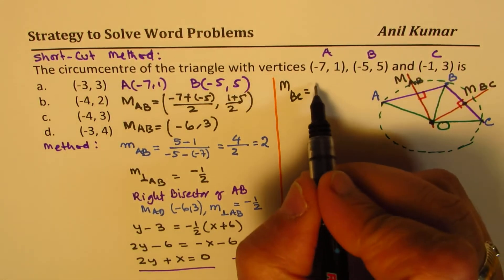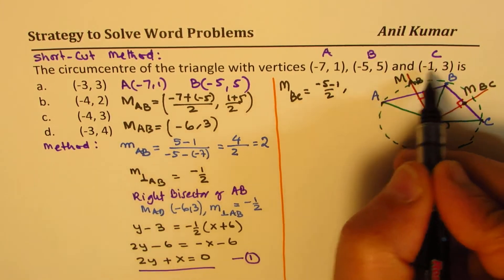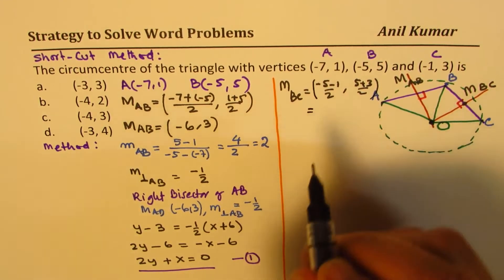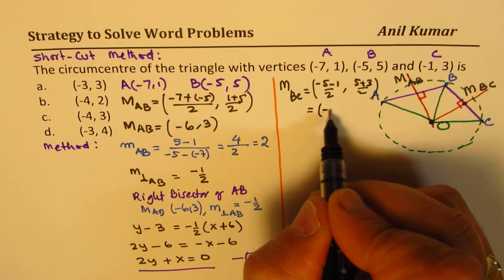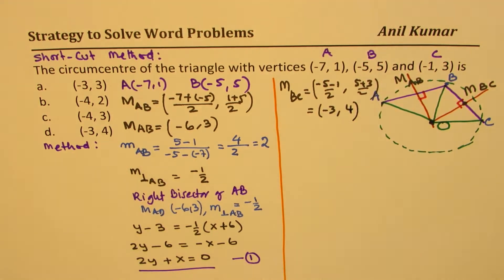So x values -5 -1 over 2, y values 5 and 3. Add them, divide by 2. So we get -6 divided by 2 is -3, 8 divided by 2 is 4. So that's the midpoint.